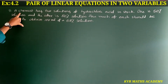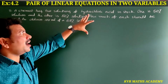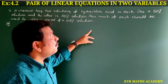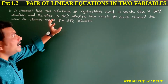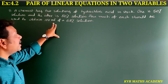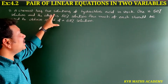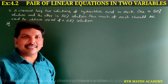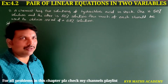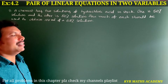This is the ninth problem in exercise 4.2. A chemist has two solutions of hydrochloric acid in stock. One is 50% solution and the other is 80% solution. How much of each should be used to obtain 100 ml of 68% solution?